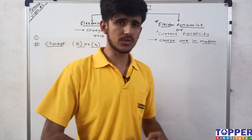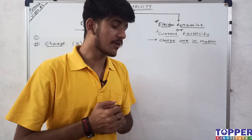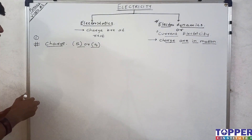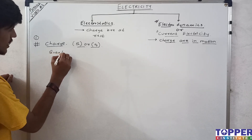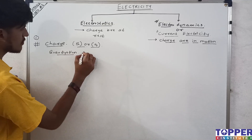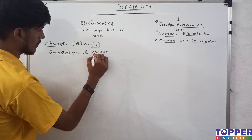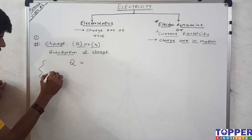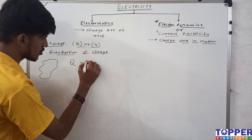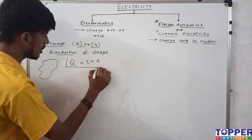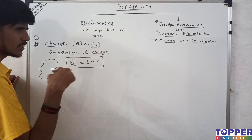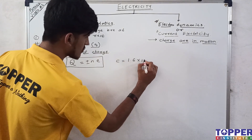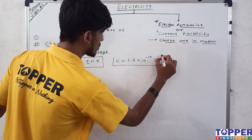The definition of charge is something very few students know. Charge is defined as the integral multiple of e — this is also called the quantization of charge. What does this mean? The charge on any material is always an integral multiple of e, where n is an integer (0, 1, 2, 3, -1, -2, etc.) and e has a value of 1.6 × 10⁻¹⁹ coulombs. This is the unit of charge.